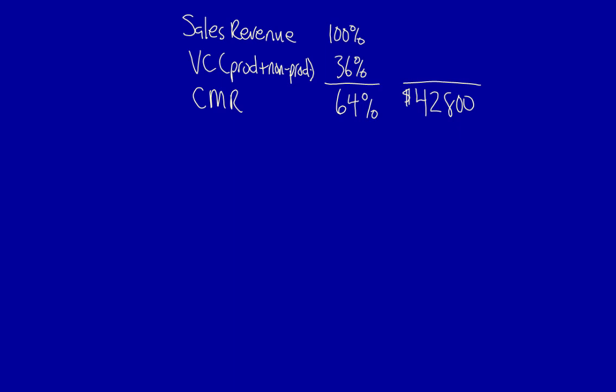The formula to calculate Contribution Margin is: sales revenue in dollars multiplied times the Contribution Margin Ratio is equal to the Contribution Margin in dollars. Well, sales revenue, we don't know. But we do have the Contribution Margin Ratio and we do have the Contribution Margin in dollars.